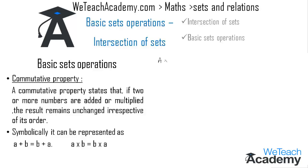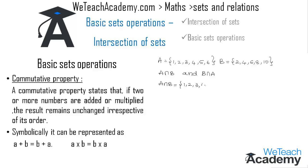We have set A = {1, 2, 3, 4, 5, 6} and set B = {2, 4, 6, 8, 10}. Let us find A intersection B and B intersection A. For A ∩ B: the elements of A are {1,2,3,4,5,6} intersected with B = {2,4,6,8,10}. The common elements are 2, 4, and 6. So A ∩ B = {2, 4, 6}.